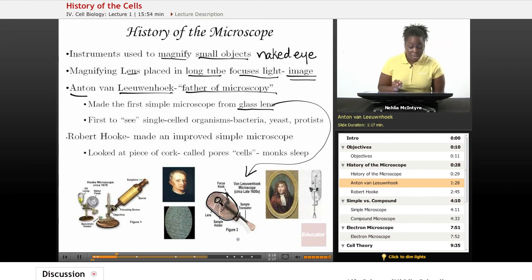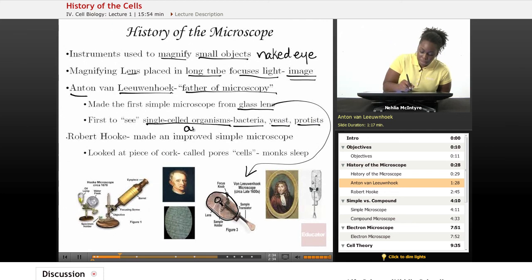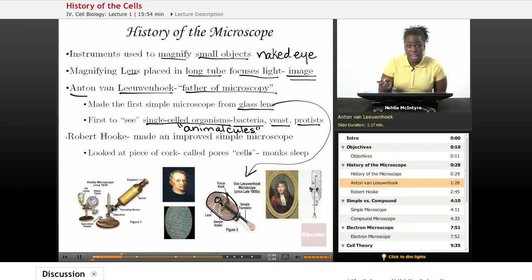But he was able to see, for the first time, single-celled organisms or unicellular organisms such as bacteria, yeast, and protists. And he actually noticed that they were living things, and he called them animalcules, which is a cool kind of funny name. Because at the time, of course, we hadn't identified all of those structures, all of those different organisms that we have now.